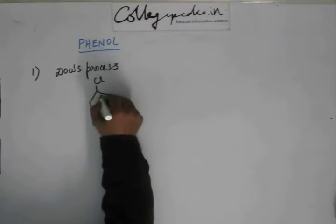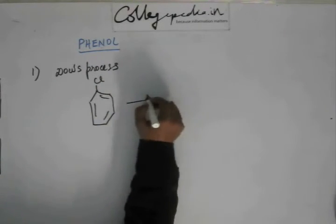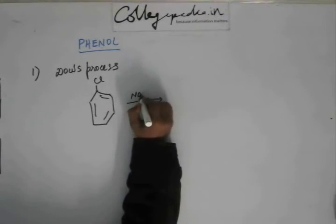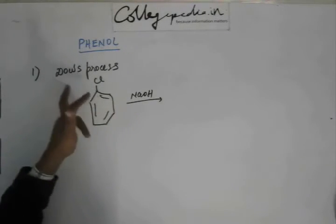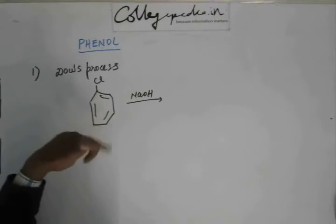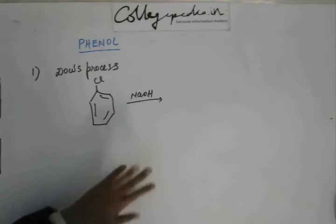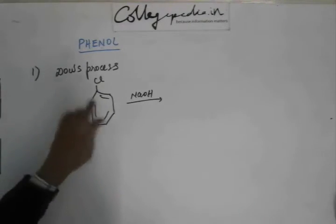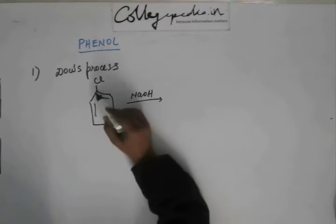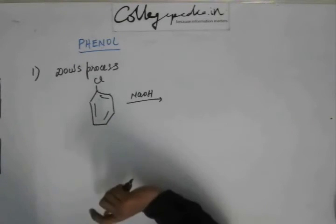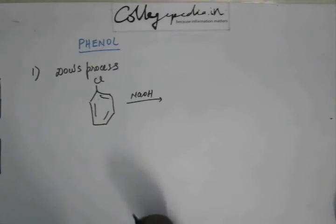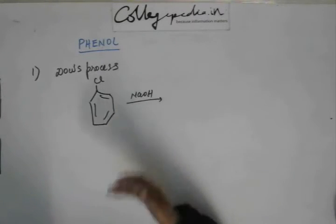So let's start. Method number 1 is called DOS process. In DOS process we take chlorobenzene and suppose I add base to this chlorobenzene. Then we understand, based from the chapter of hydrocarbon, we know that nucleophilic substitution does not occur on this benzene like this. Because this benzene has pi electron cloud density above and below the plane of the ring, and this base has negative charge. So that negative charge will not approach this benzene ring. Plus there cannot be an SN2 substitution because the antibonding of this carbon is inside the ring. So no nucleophile can approach that antibonding to put its electron.